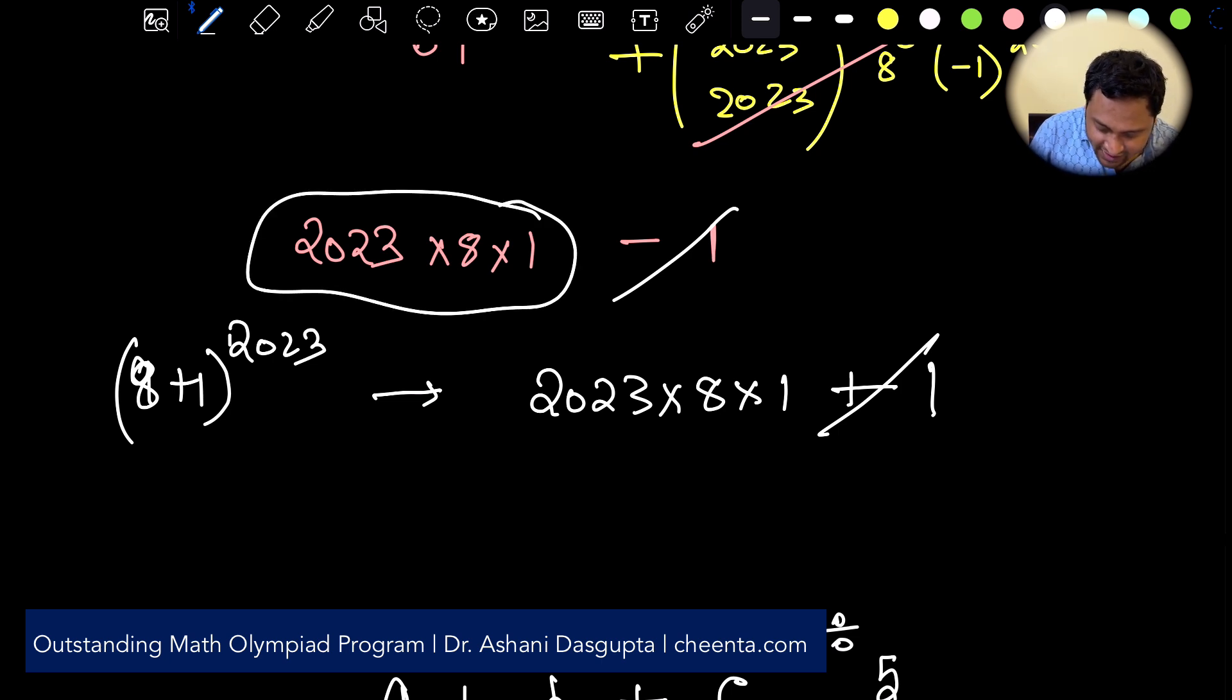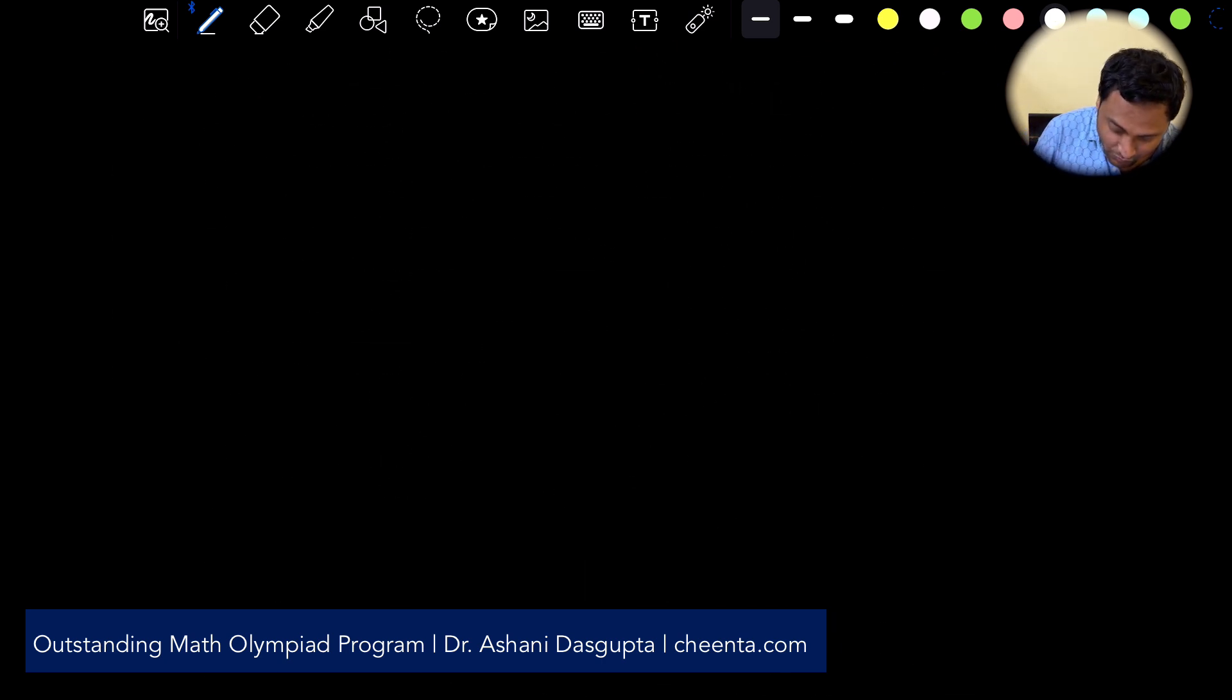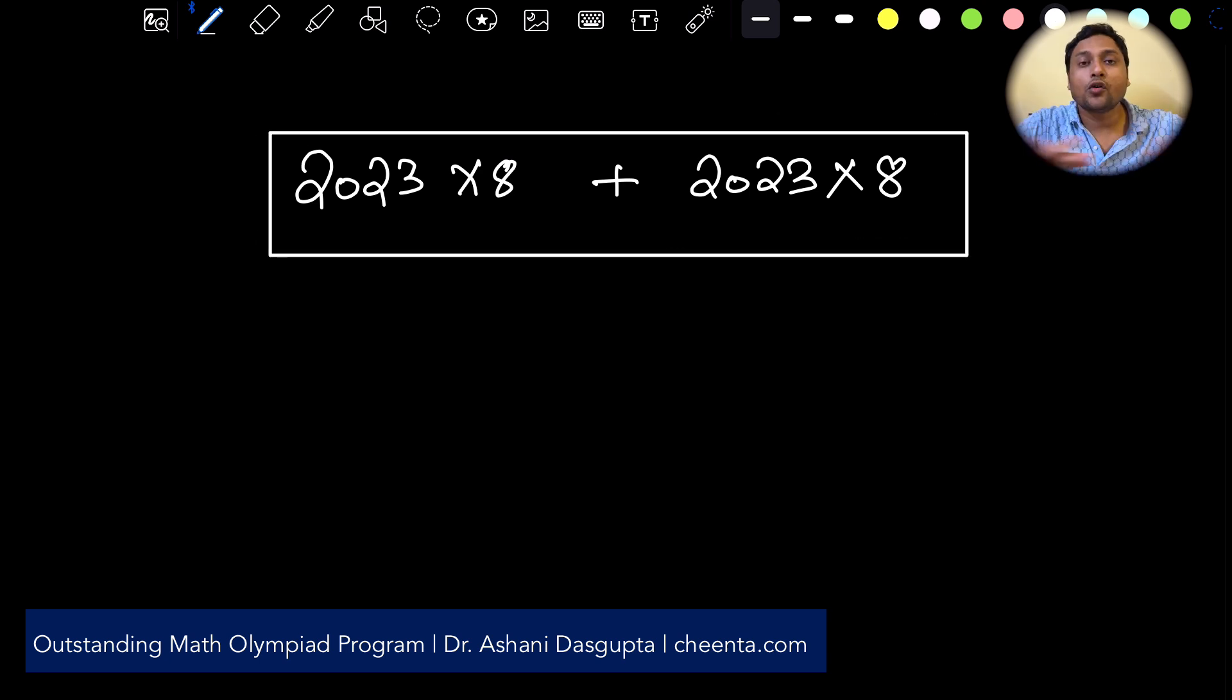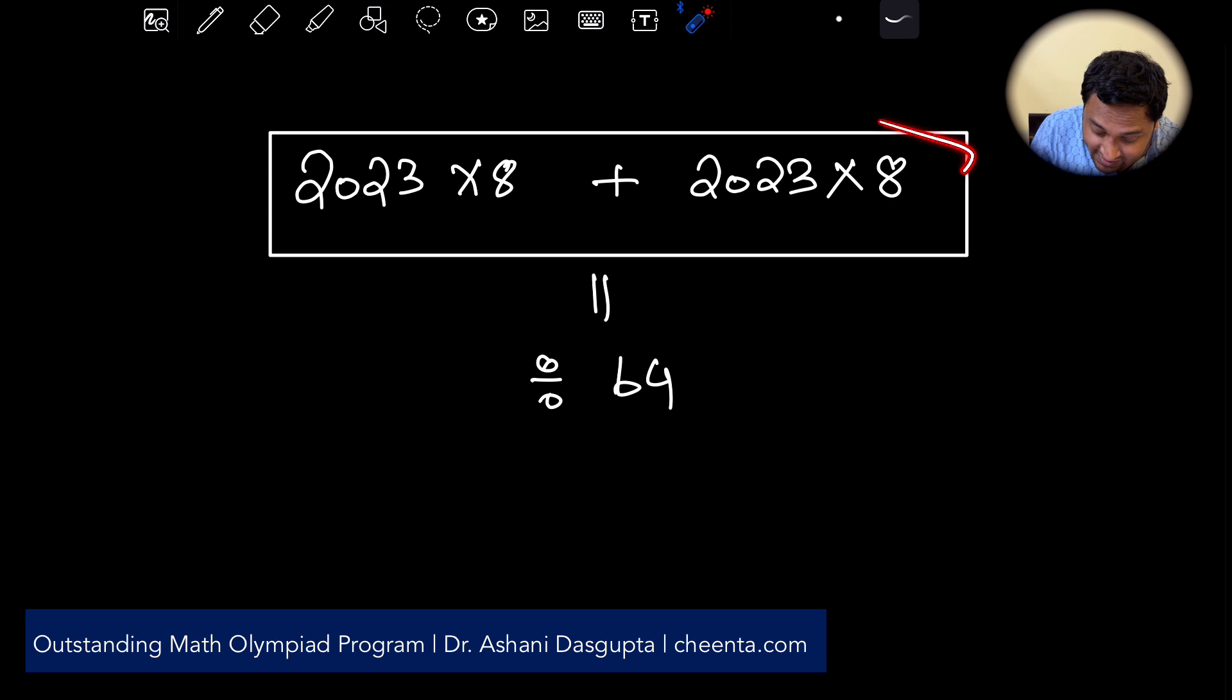And we have 2023 times 8 plus 2023 times 8. This is what remains when you just throw away all of the terms which has a power in which 8 has a power of 2 or more. So what happens if you divide this by 64? Now this number is significantly smaller you can actually hand compute it and add it up and check what you get. So this is the challenge question. Check what you get as the final remainder and put it in the comment section.